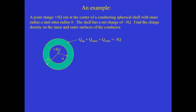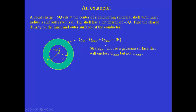The total charge on the conducting shell is q_inner plus q_outer, and we know that sum equals minus 3q. But that alone doesn't solve the problem — we want to find these two charges separately. The strategy using Gauss's law is to choose a Gaussian surface that lies in a region where one charge is enclosed and the other is outside of it. That allows us to apply Gauss's law and solve for one charge, and then get the other from the sum equation. Once you see this strategy executed, it's easy to follow.